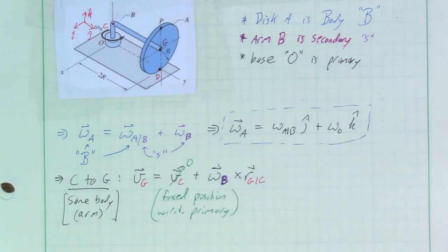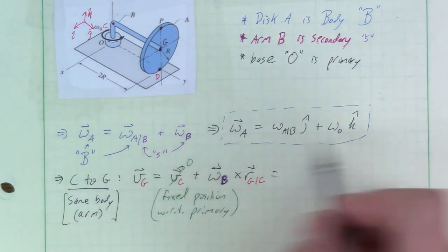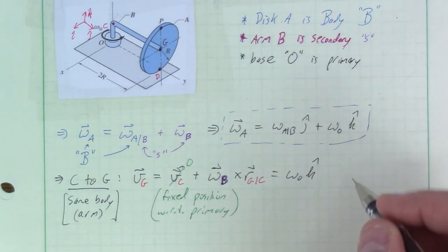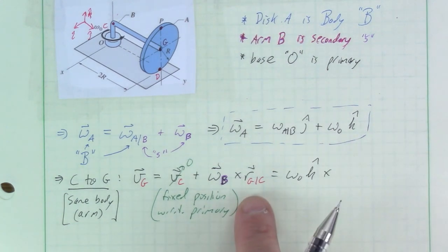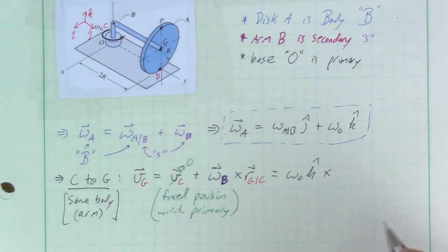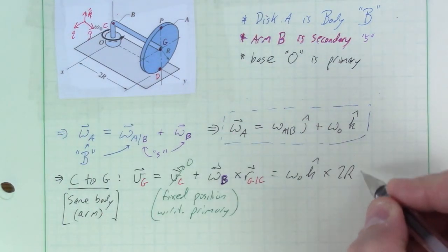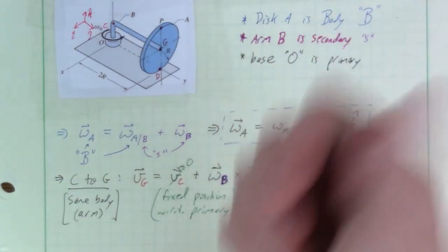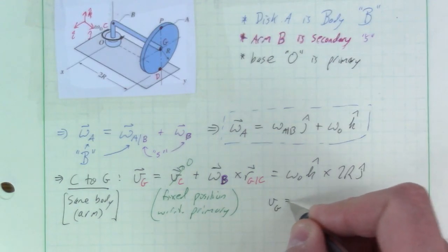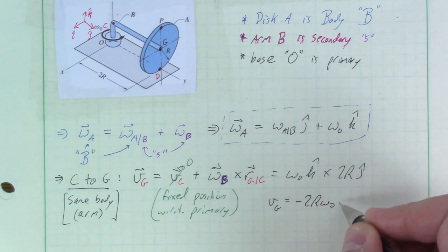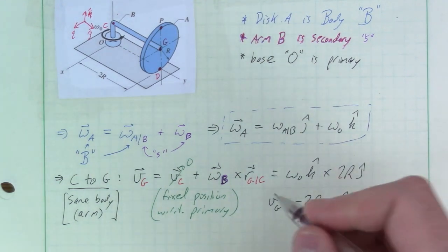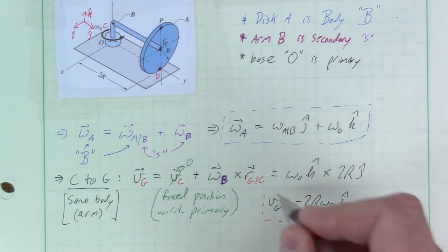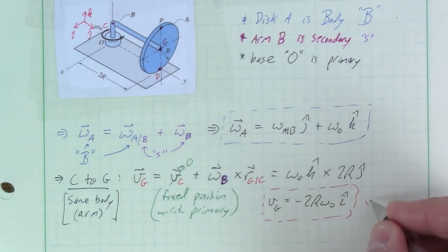Plugging in: omega-naught k-hat crossed into 2r j-hat. k-hat crossed into j-hat is negative i-hat, giving v_G = minus 2r·omega-naught i-hat. That's a useful intermediate result, not the final answer.